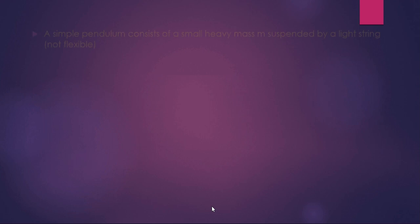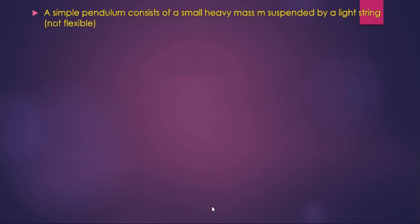A simple pendulum consists of a small heavy mass M suspended by a light, non-flexible string. There are two types of strings: flexible and non-flexible. Flexible means when you apply a force on a string, its length increases. If a force is applied and the length of the string does not increase, then it is non-flexible.